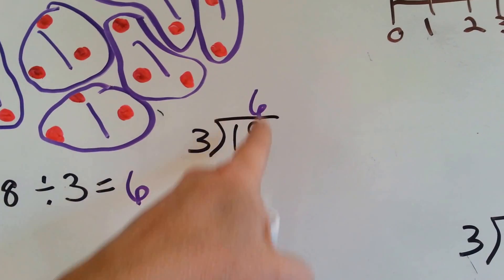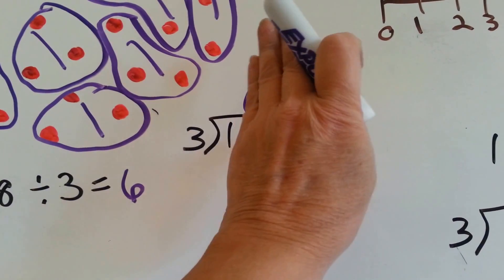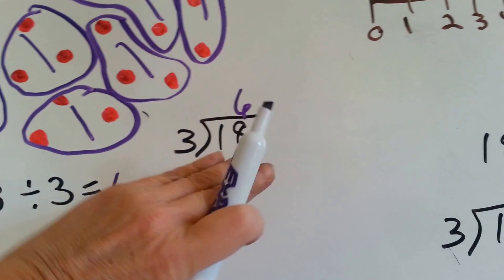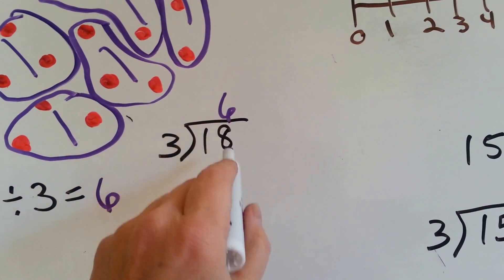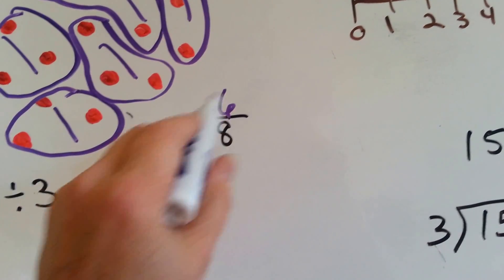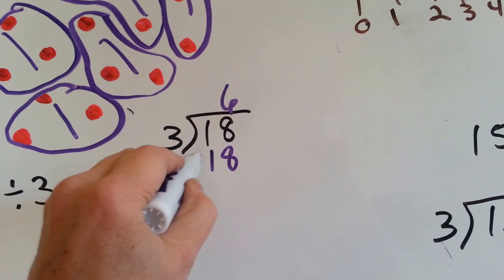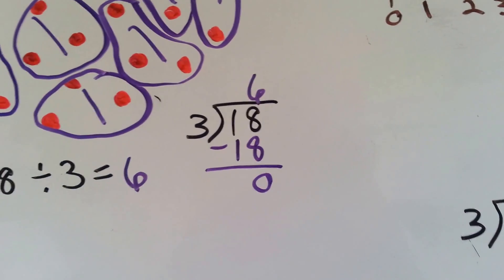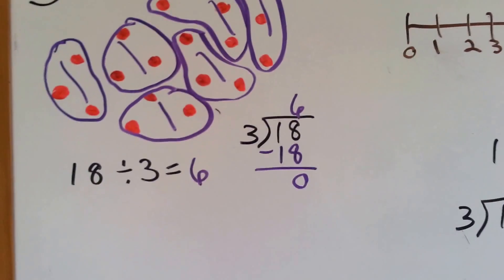We put the number above the 18, because we're not saying 3 goes into 1. We're saying 3 goes into 18, so we have to put it above the 1's place. 3 times 6 is 18. We do our subtraction and we get 0 remainder. That means we did it correctly.